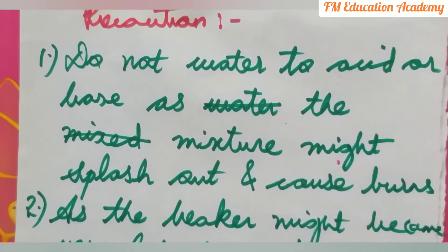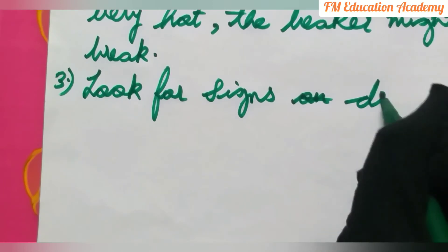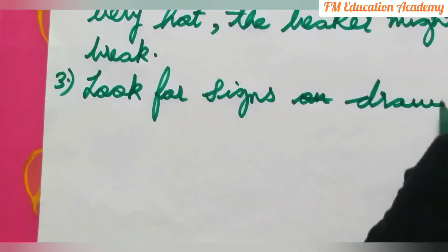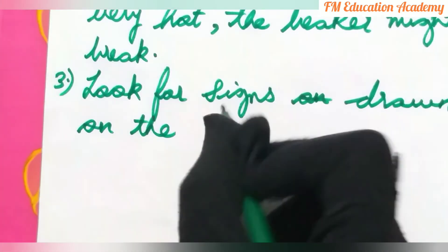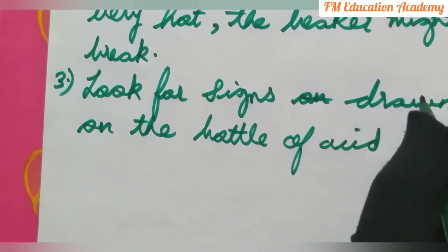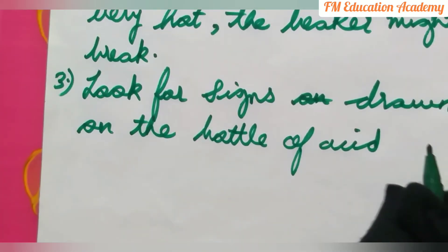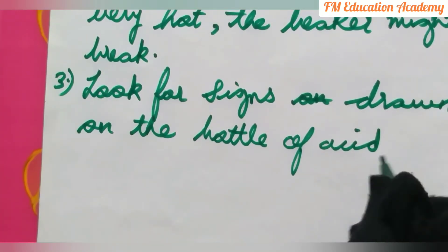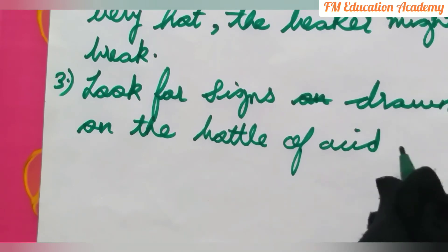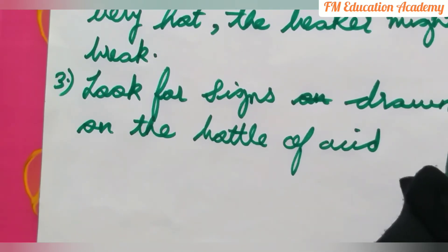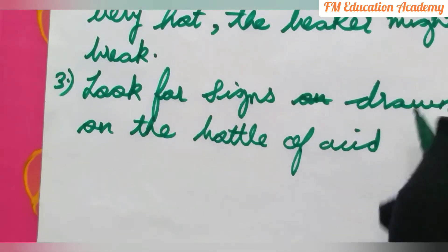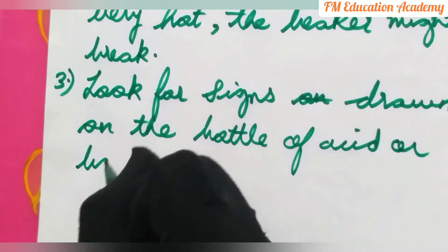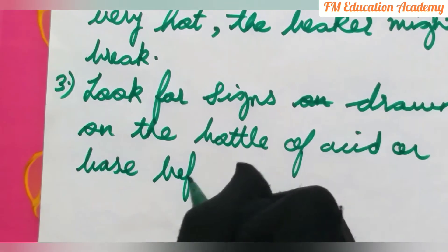Also, look for warning signs drawn on the bottle of acid or base before using them. For example, concentrated sulfuric acid, concentrated sodium hydroxide, and concentrated nitric acid all have warning signs on their bottles. Always check these signs before use.